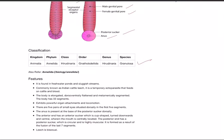Now come to the features. It is found in freshwater ponds and sluggish streams, commonly known as Indian cattle leech. It's a temporary ectoparasite that feeds on cattle blood. The body is elongated, dark, ventrally flattened, and metamerically segmented.